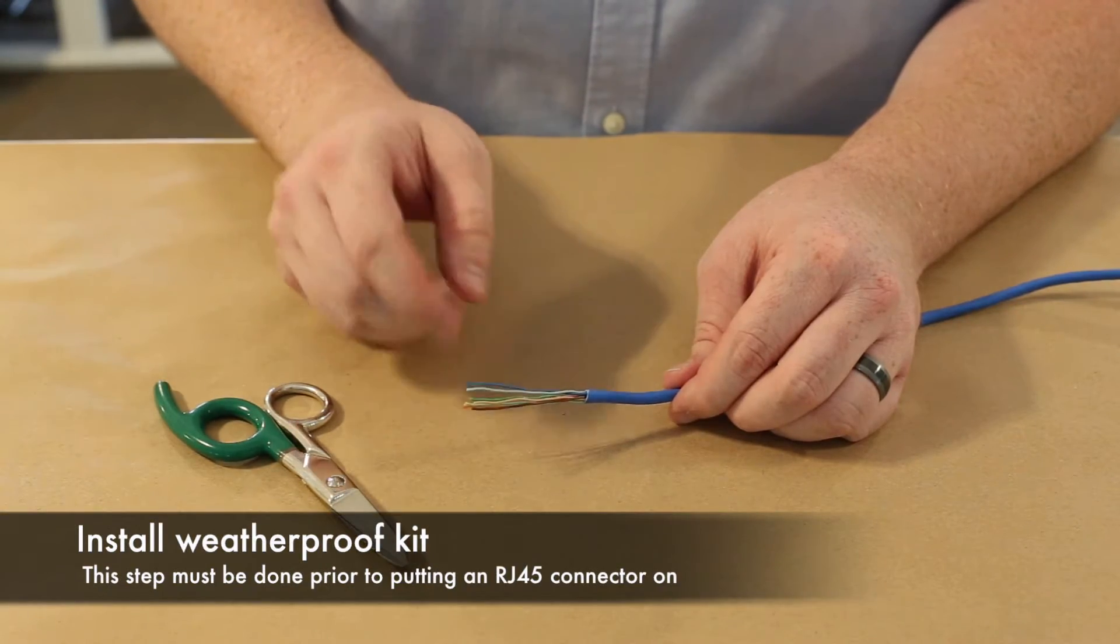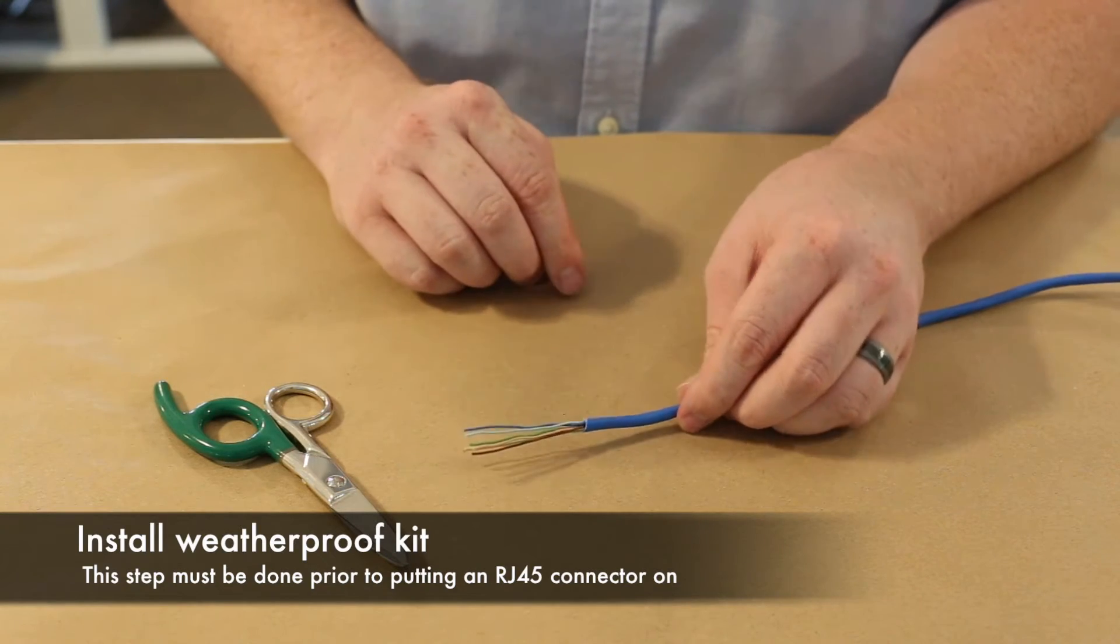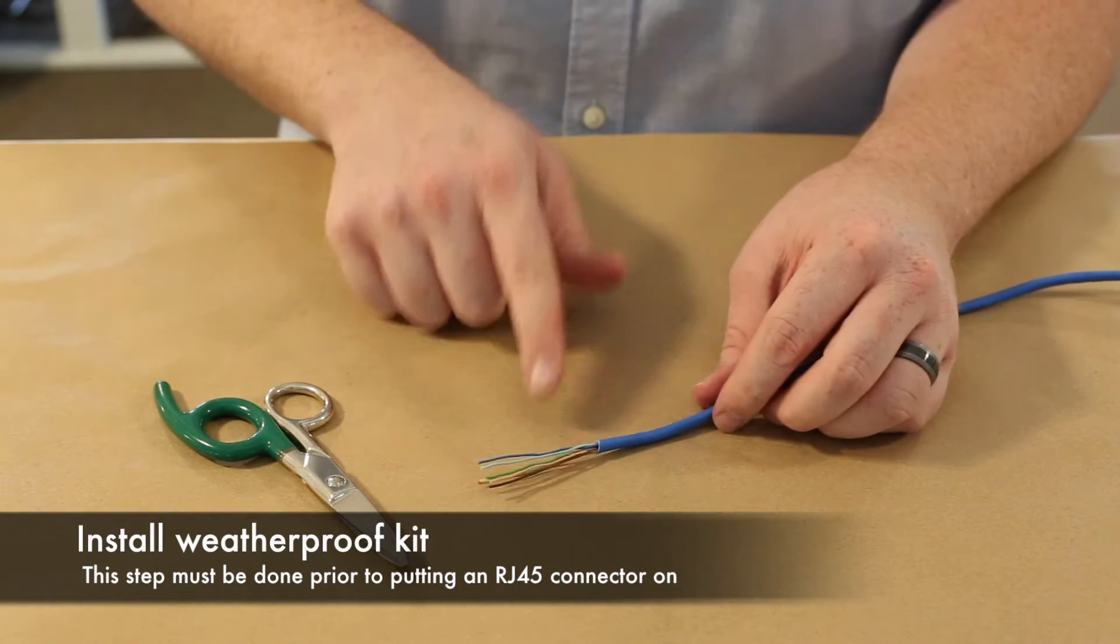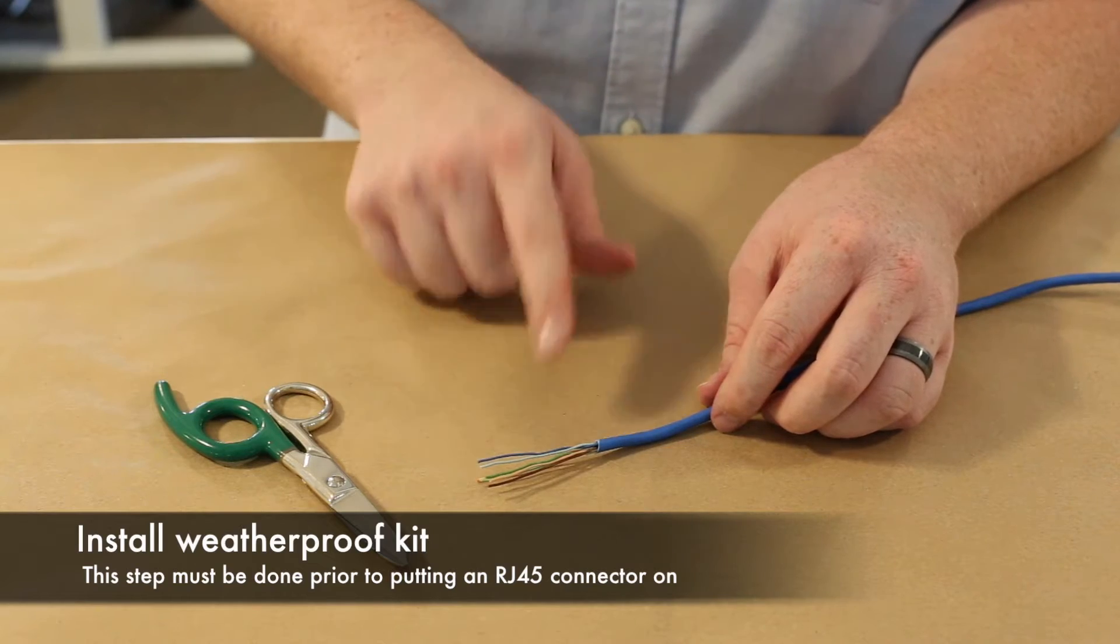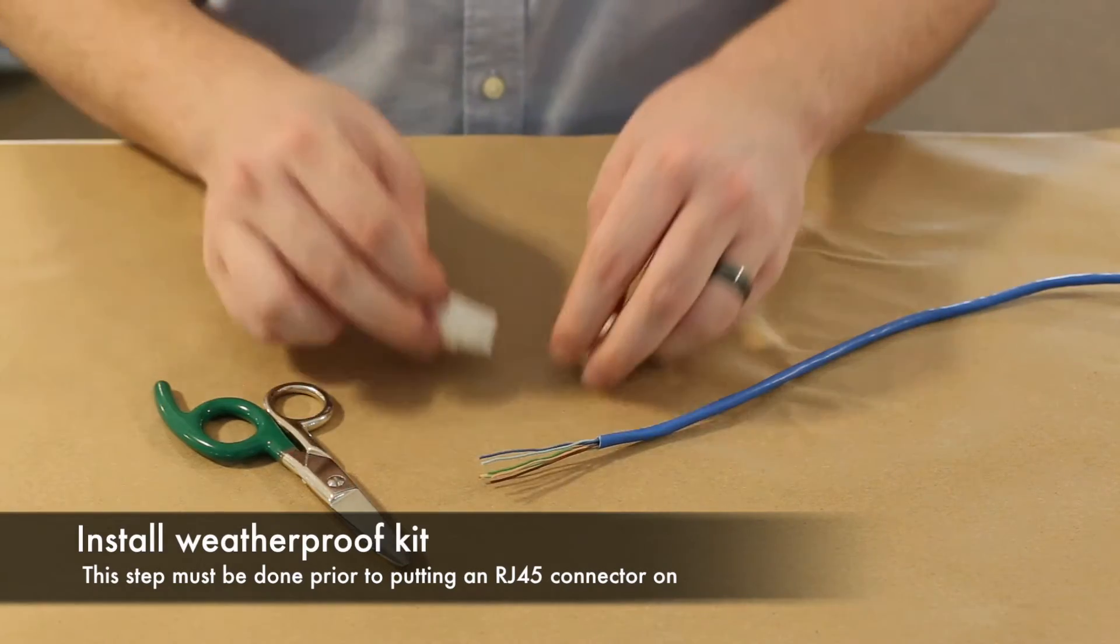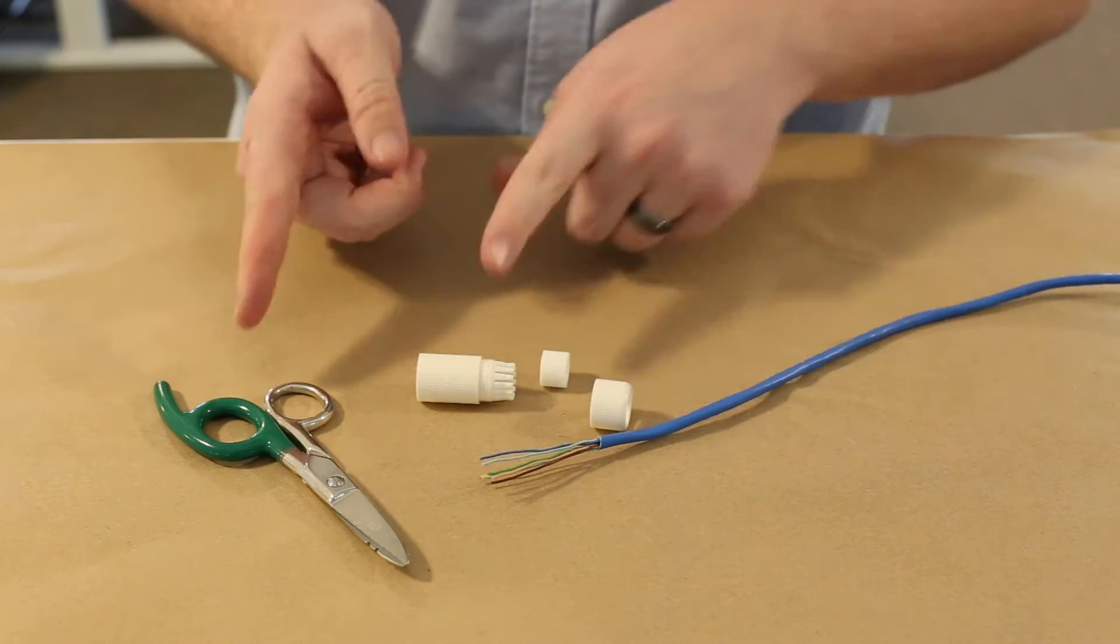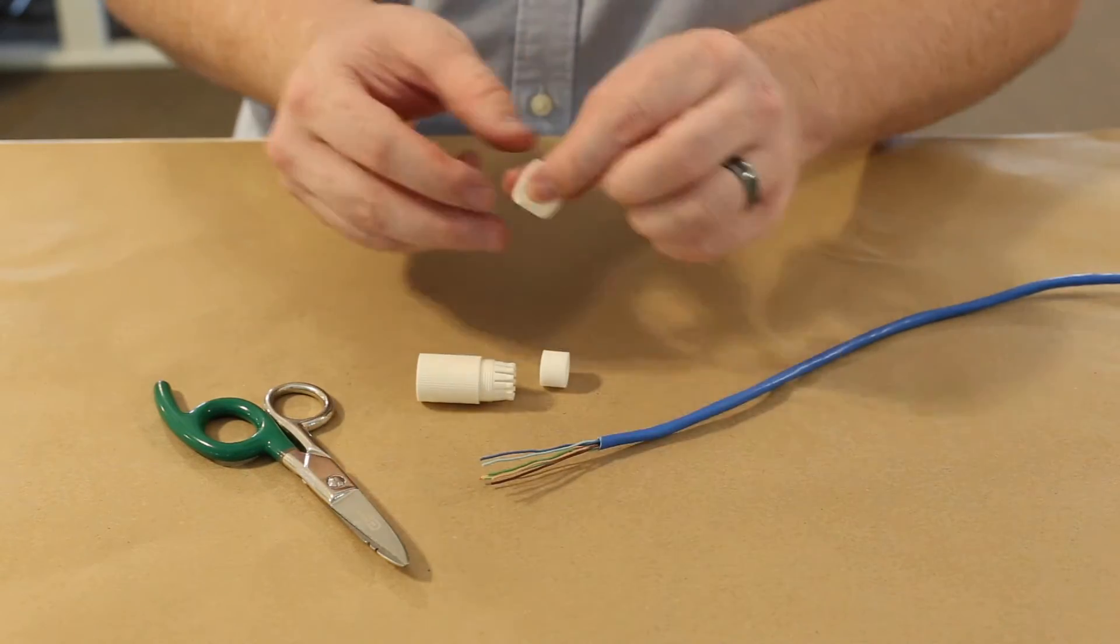So now that we got each pair untwisted I want to take the opportunity to go ahead and put on our weatherproof connector. We need to make sure we do this before crimping our RJ45 on there. So we're going to use these three pieces of the connector here and they're going to go in this order. So this piece goes on first.